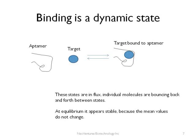Remember that we are not describing a static state. The whole system is still in flux. Aptamers are binding to the target and complexes are falling apart. What we are measuring is the level bound at equilibrium when the amount being bound equals the amount coming apart.